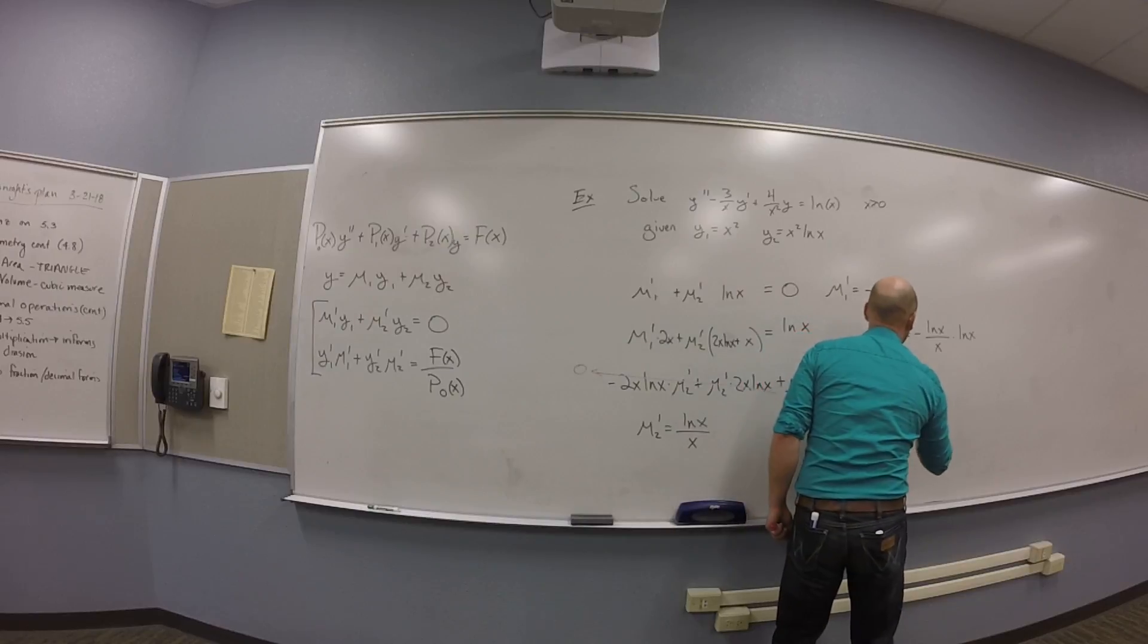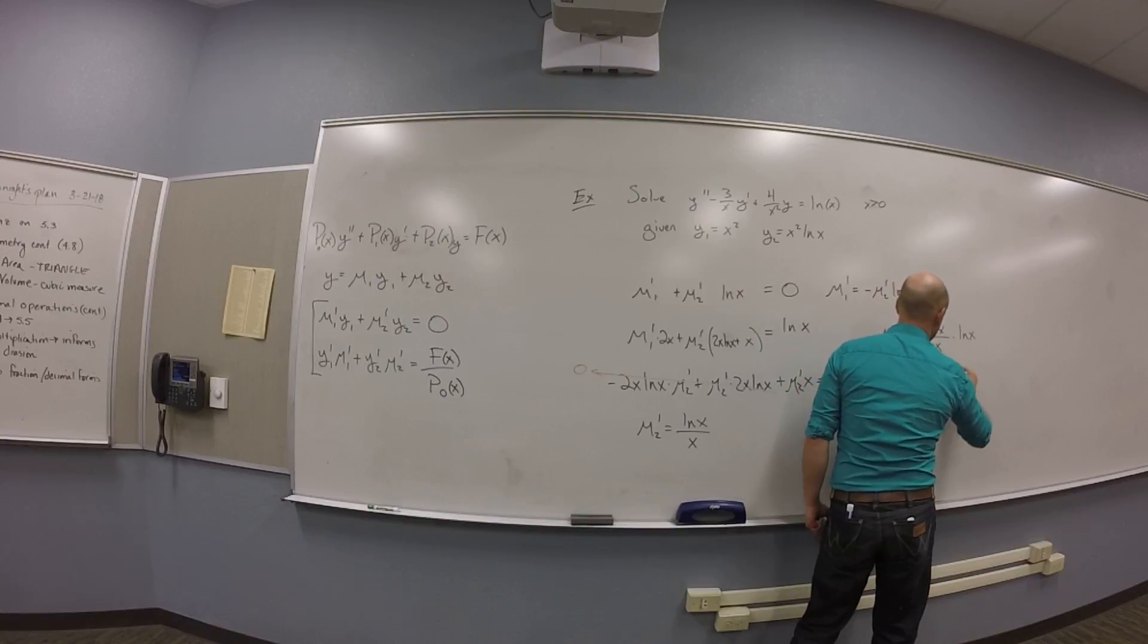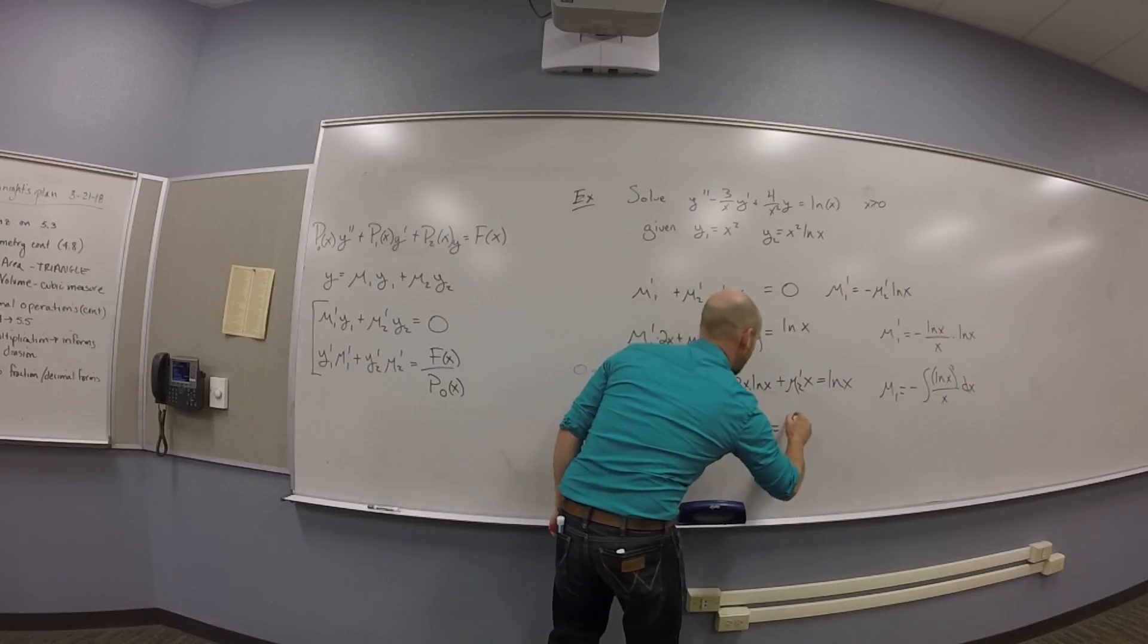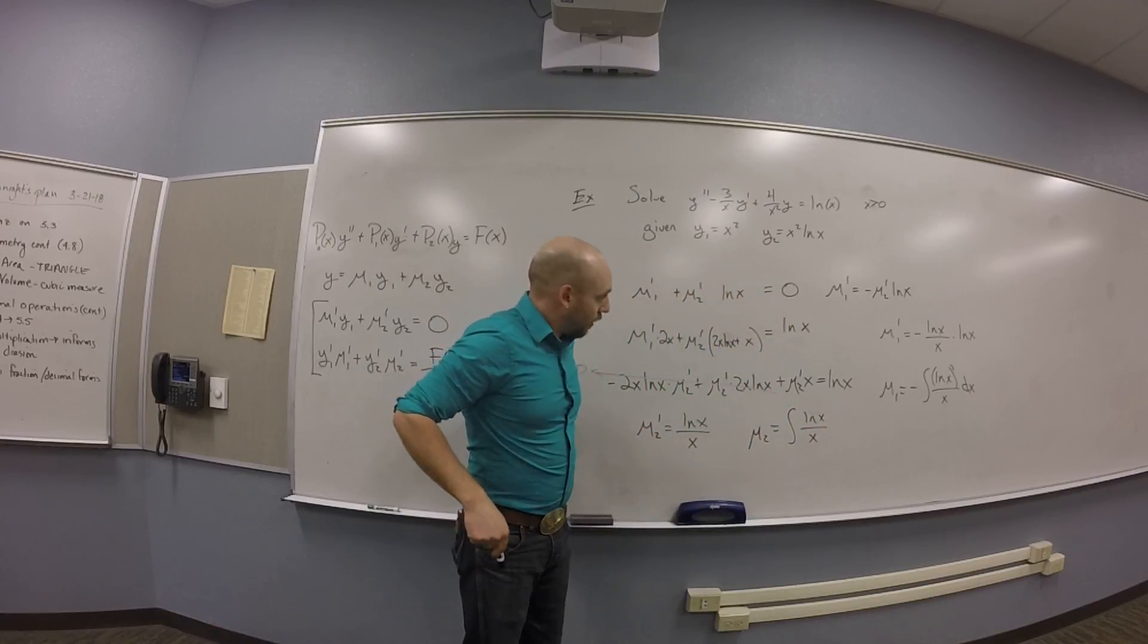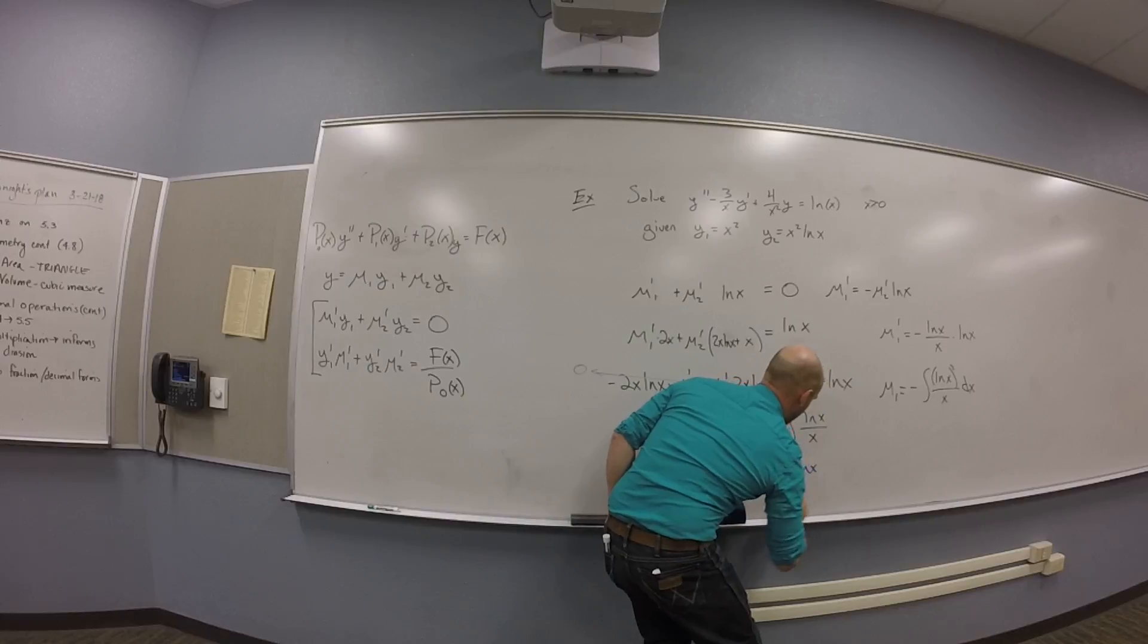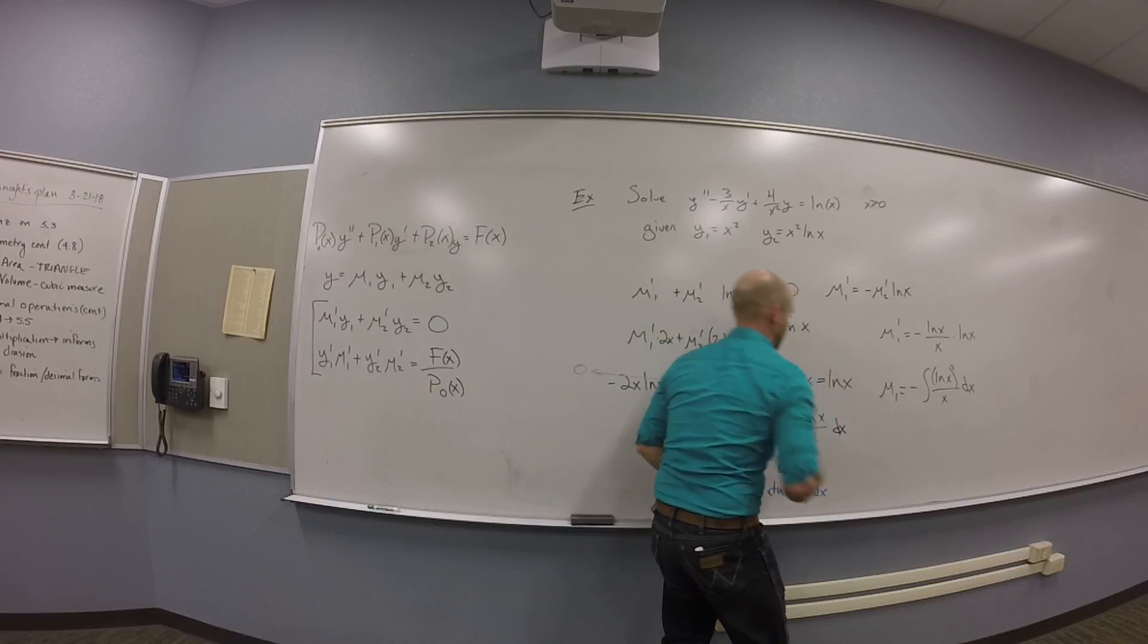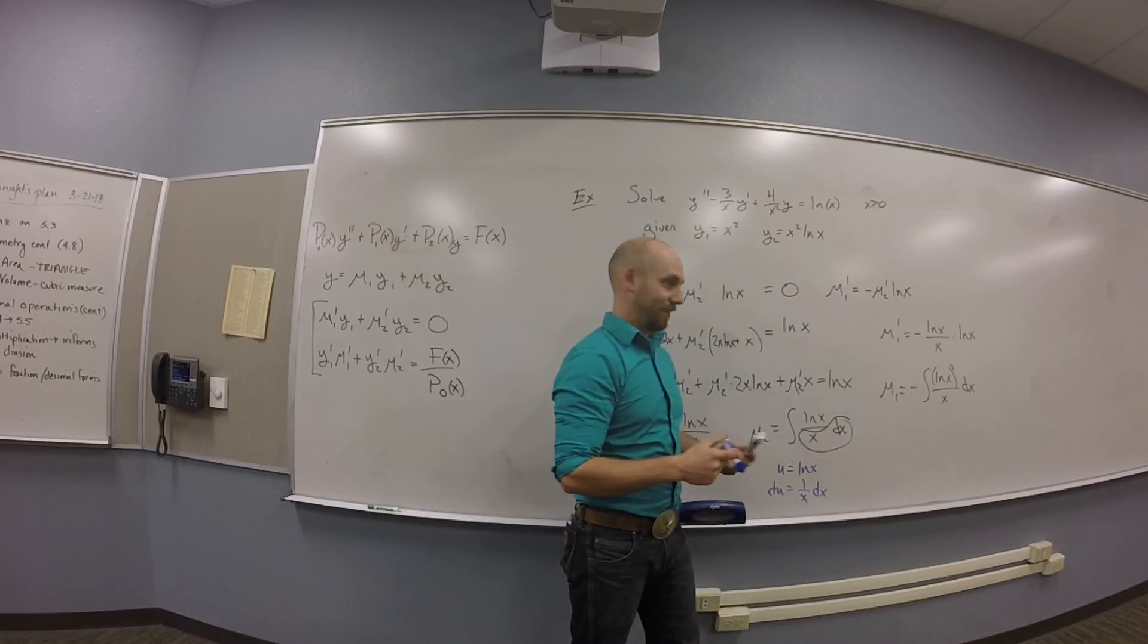Right? So, you need to slap an integral on this thing. You get mu1 is minus the integral of log of X quantity squared over X dx. And on this one, you get mu2 is the integral of log of X over X. We can use the natural log of X. Okay. Both of them are u-sub. That's a nice one, actually. So, let u be log X here. Then du is 1 over X dx. Oh, whoops. Get away from the dx. Okay. So, there's your du.